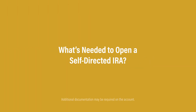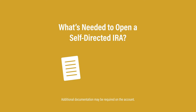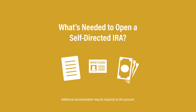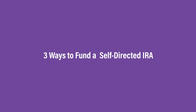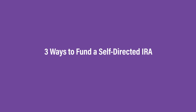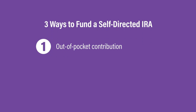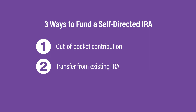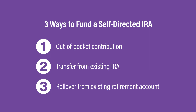For most accounts, all you need is a signed application, a copy of your driver's license, and a method of funding. The most common methods of funding a self-directed IRA at Equity Trust include out-of-pocket contributions, transfers, and rollovers.